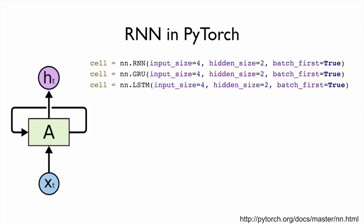In order to use RNN in PyTorch, we don't need to understand everything internally. We just use the RNN module. The only things we need to provide are the input size and the output size — here called hidden size. We also specify how to order our data using the batch_first option. We can also use GRU or LSTM — everything is the same, we just change the name.